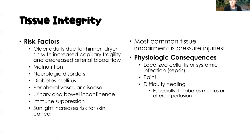The physiologic consequences of tissue integrity impairment include localized cellulitis, or even worse, a systemic infection — which is sepsis. Tissue integrity impairment is also often very, very painful, and some patients will have difficulty healing.